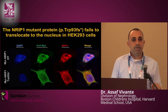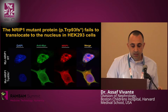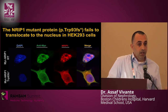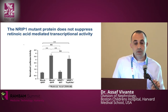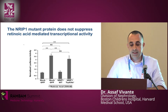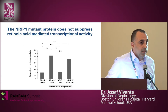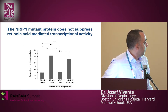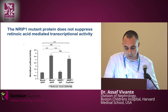Our next step was to perform in vitro studies. We showed that the NRIP1 mutant protein fails to translocate into the nucleus in HEK cells. In the upper panel, wild-type NRIP1 is mainly located in the nucleus, while the truncated protein fails to do so. We also showed that the NRIP1 mutant protein does not suppress retinoic acid-mediated transcriptional activity. In a luciferase assay using a construct containing the retinoic acid response elements, retinoic acid treatment produced transcriptional activity which was suppressed when wild-type NRIP1 was added, but there was a lack of suppression with the mutant protein.